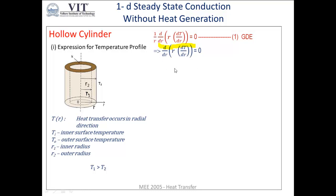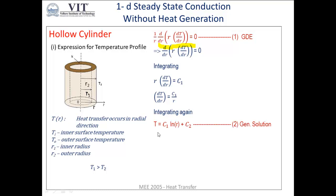We need to integrate twice because there are two differentiations inside this expression — dT/dR is the inner differentiation and there is one more differentiation outside. Integrating once, we get R · dT/dR = C1, an arbitrary constant. From this, dT/dR = C1/R. Integrating again, we get the temperature: T = C1 · ln(R) + C2, where C2 is the second arbitrary constant.